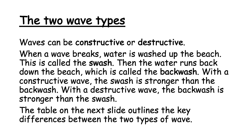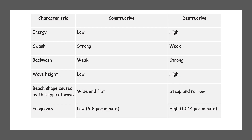There's going to be a table on the next slide which outlines the key differences between the two types. You're welcome to pause it and copy it down. A destructive wave has high energy whereas a constructive wave has low energy. Swash and backwash are opposite for each. Destructive has a higher wave height — that's the distance between the crest and the trough. They create different shapes of beach: constructive waves create wide and flat beaches whereas destructive waves create steep and narrow beaches. Frequency is also different — constructive waves produce about six to eight waves per minute whereas destructive waves produce between ten and fourteen per minute.